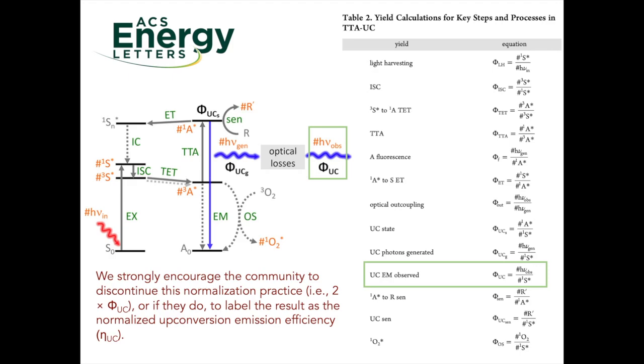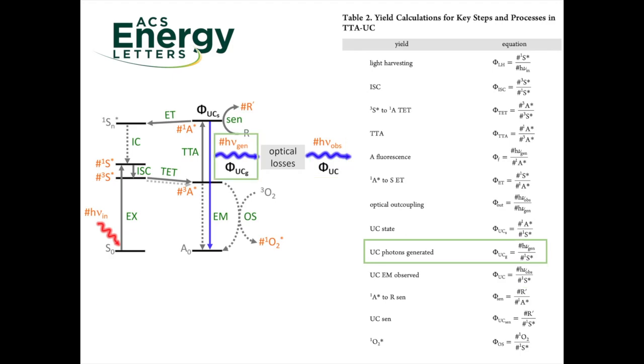In addition to phiUC, we have defined phiUCG as the quantum yield of photons generated, with the difference being the output coupling yield. The reason for this distinction is that phiUC is not necessarily intrinsic to the TTA-UC system, but instead depends on the sample architecture as well as the method of measurement.